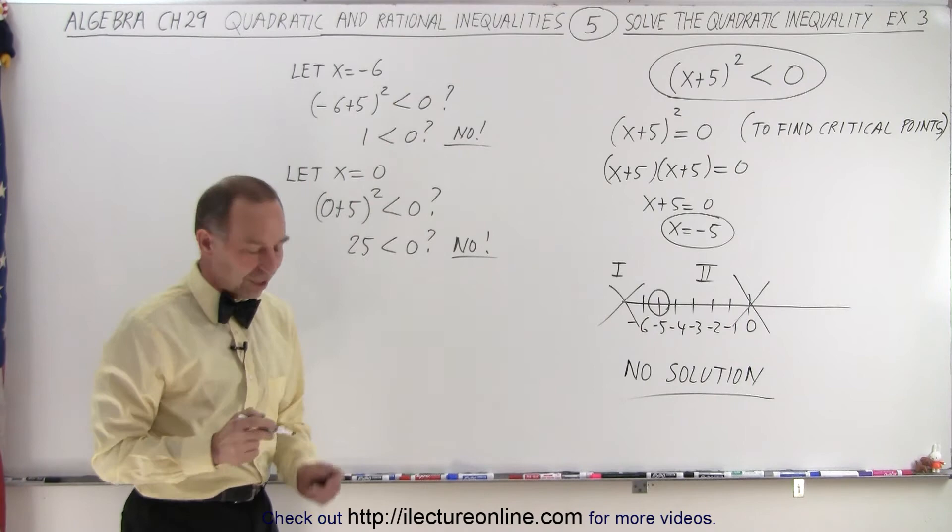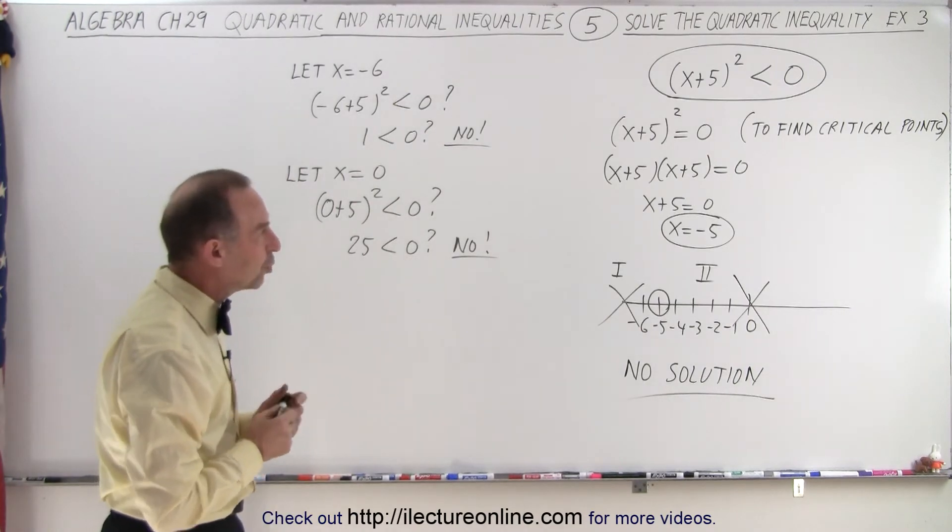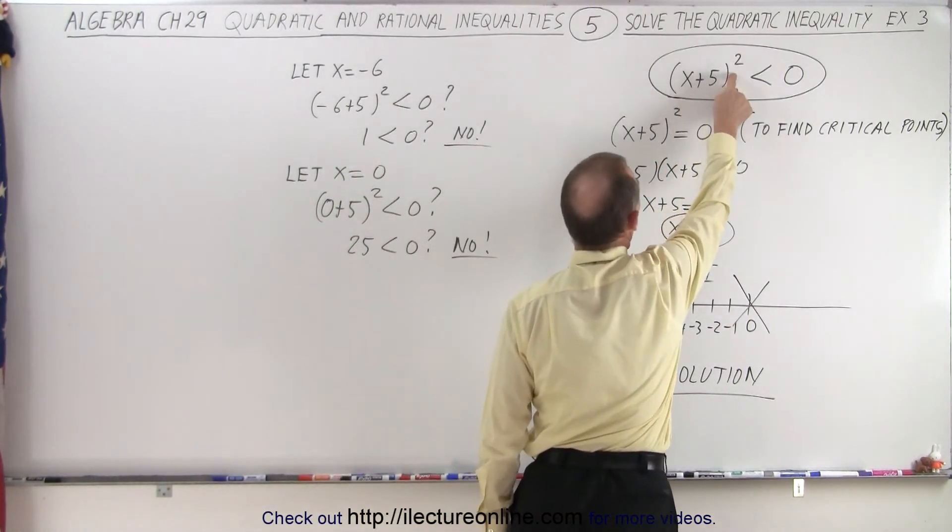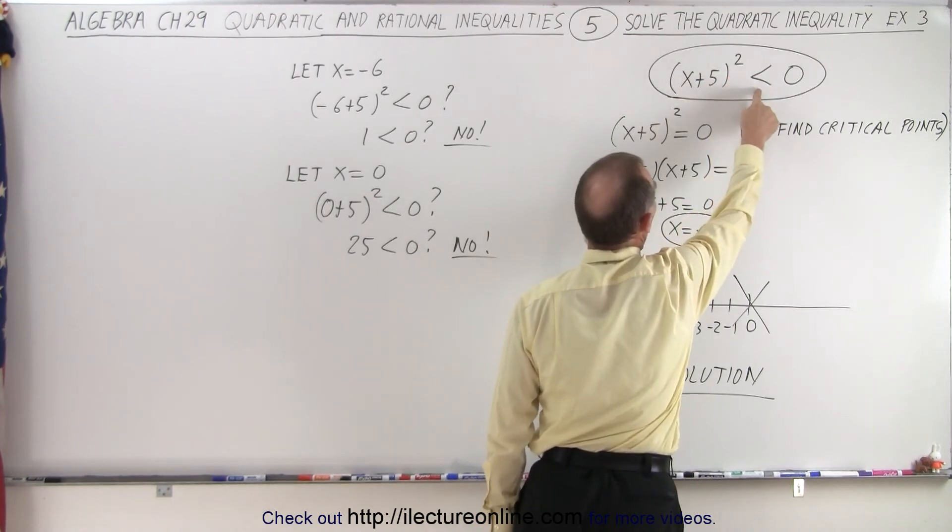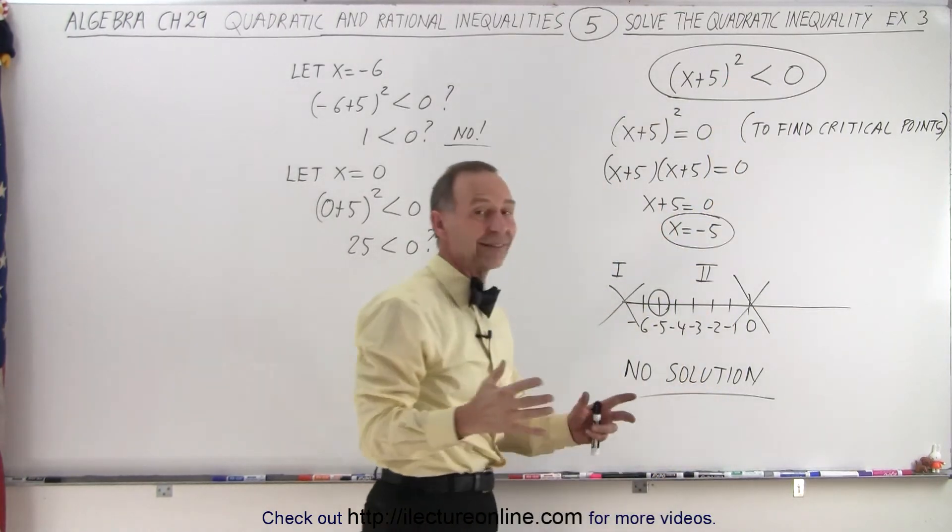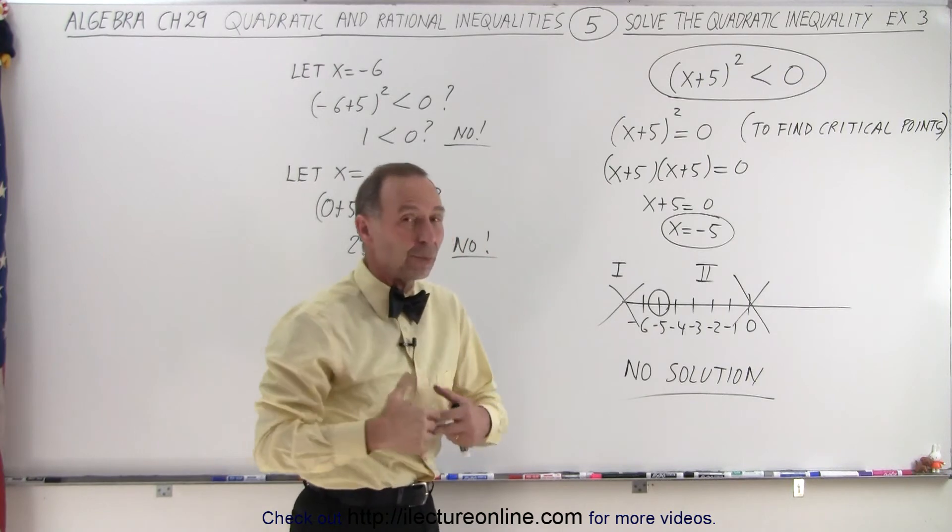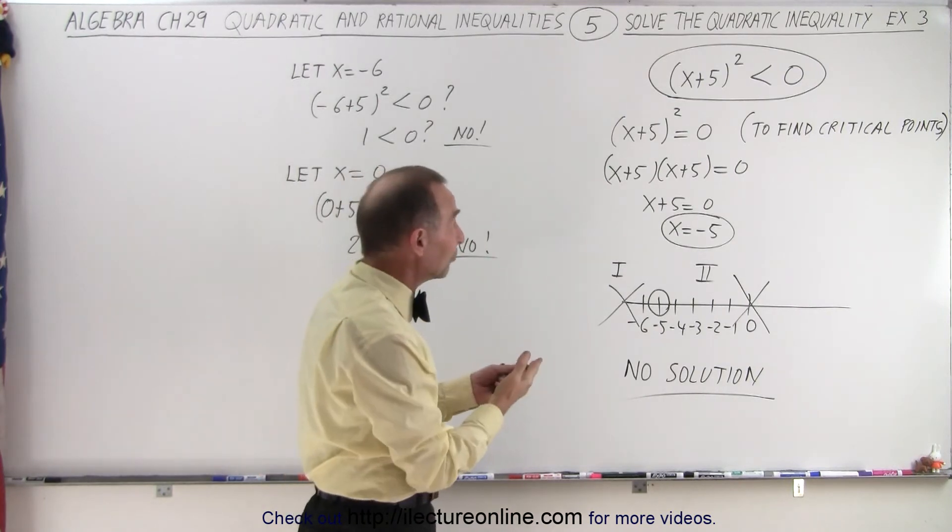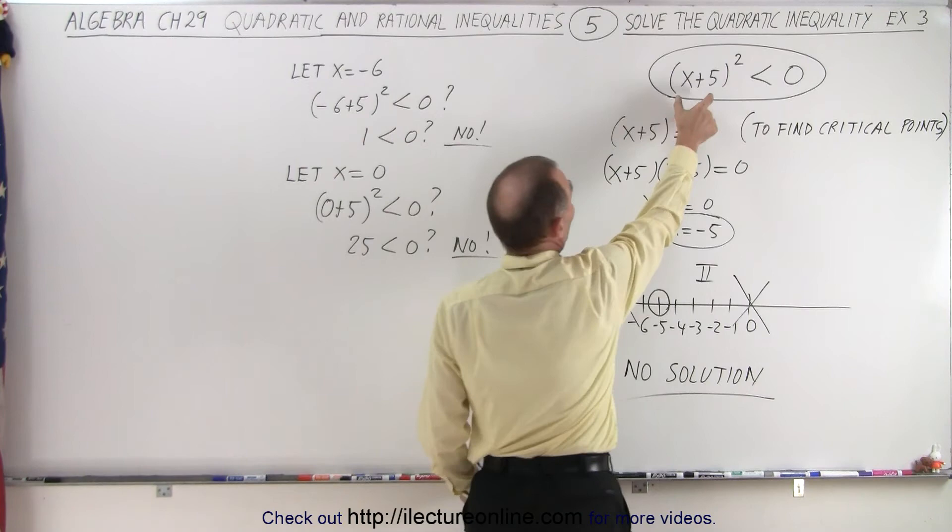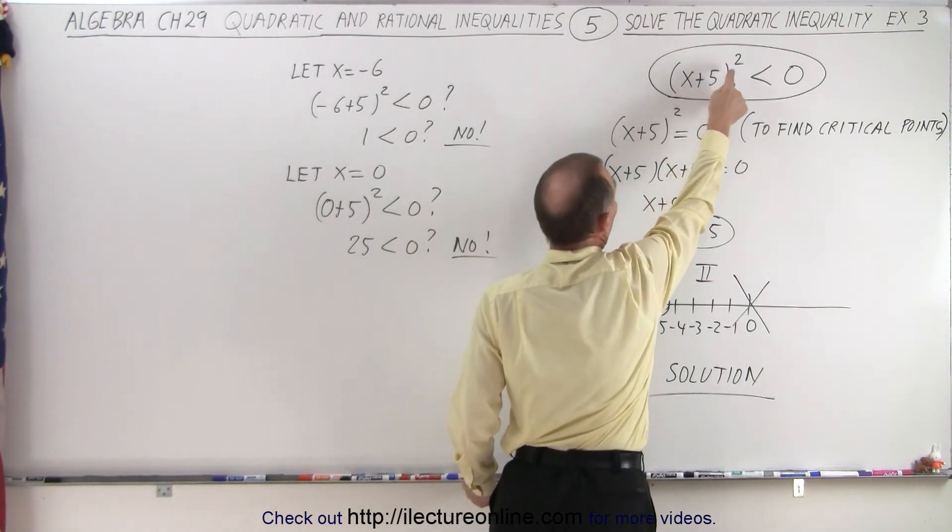Now we could have, of course, seen that right from the start. Notice we have an expression squared and they're asking us if that is less than 0. Notice that whenever we square a number, even if it's a negative number, whatever the number for x is, if this expression x plus 5 is negative, since we squared it, it will become positive.